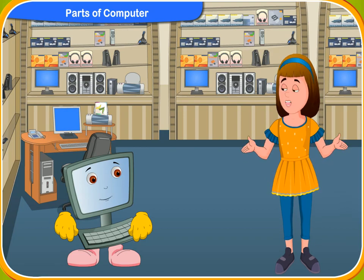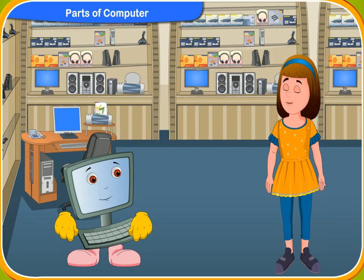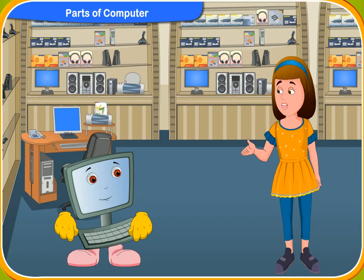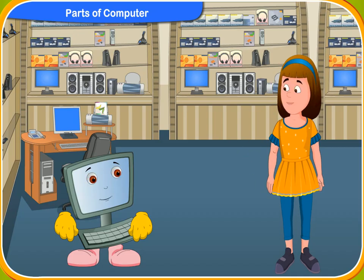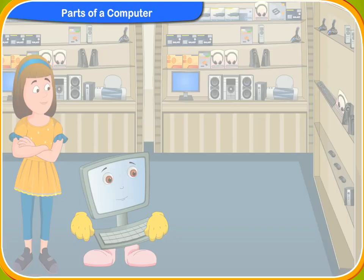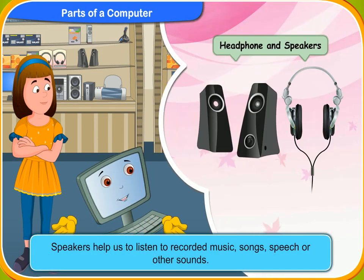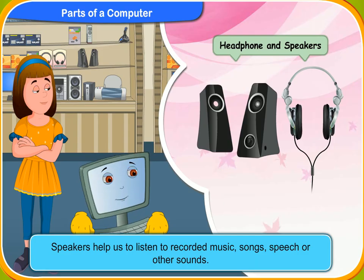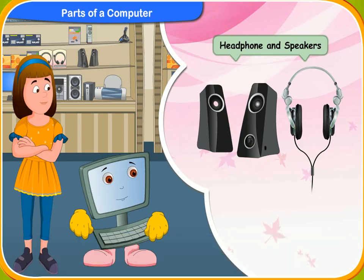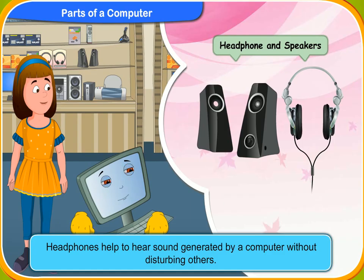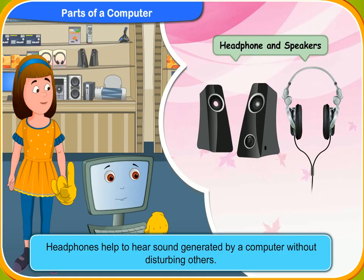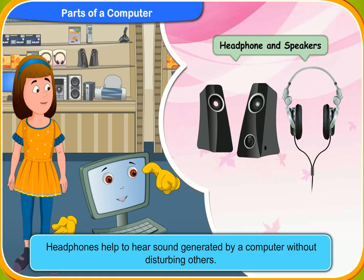So these are the main parts of the computer. Now, can you tell me what all those devices are used for, Clicko? Sure, Rennie. These are the speakers. They help us to listen to recorded music, songs, speech or other sounds. They are headphones. By using them, you can hear the sound generated by your computer without disturbing others.